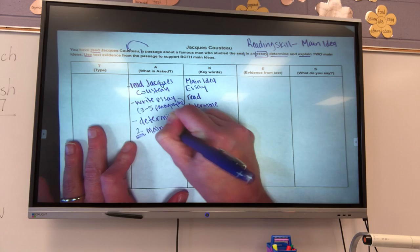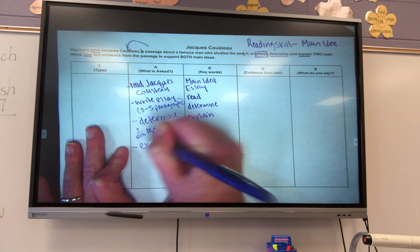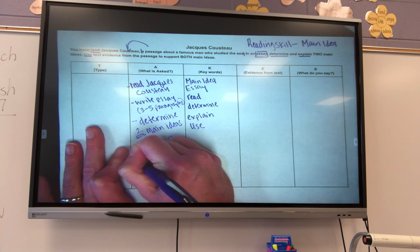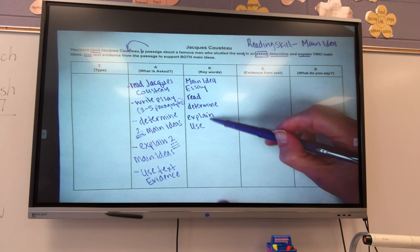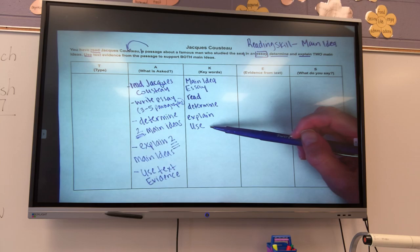What else? Determine two main ideas. Alright. It wants me to determine two main ideas. Explain two main ideas. It's wanting me to explain two main ideas. Use text evidence. And in this, I need to use text evidence.